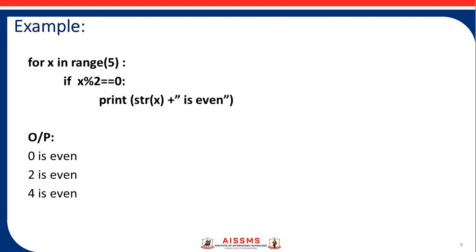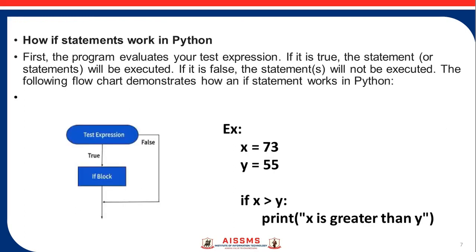Here is an example. Next, how an if-statement works in Python: first, the program evaluates the test expression. If it is true, the statement will be executed. If it is false, the statement will not be executed. The following flowchart demonstrates how an if-statement works in Python. If the condition is true, the program will be executed; if the condition is false, the statement will not be executed.